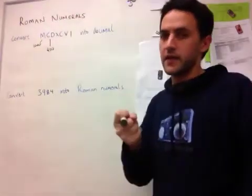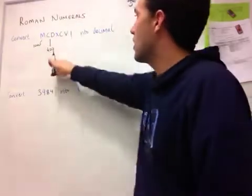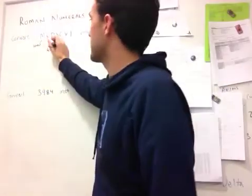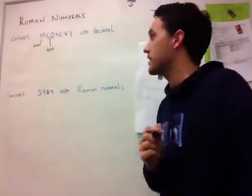We could think of that as the C being negative 100 and the D being 500, and do it that way. Or we can just think of them as a single symbol representing 400.